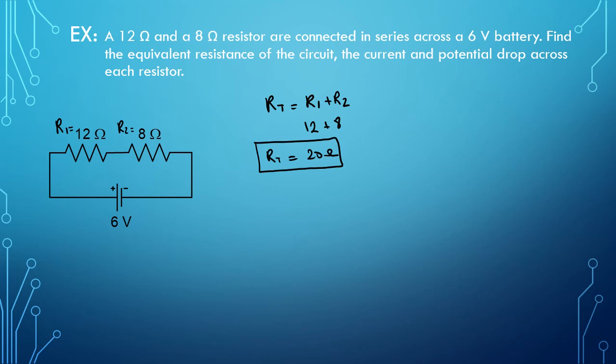Now, I also need to find the current and potential drop across each resistor. What is potential drop? Well, potential drop means the voltage used for that particular resistor. Okay, so let's start by calculating the total current.